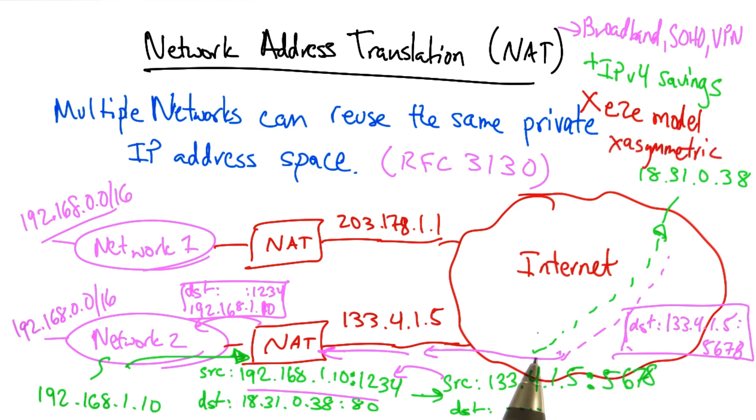It's also asymmetric. Under ordinary circumstances, it's rather difficult for a host on the global internet to reach a device in a private address space in network one or network two, because by default, those devices in these private networks do not have public globally reachable IP addresses. So NAT both breaks end-to-end communication, and it also breaks bidirectional communication.